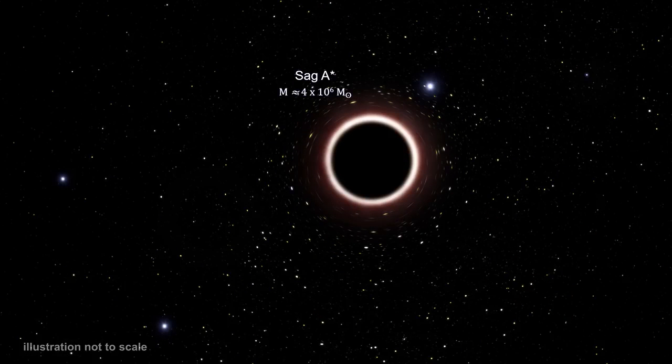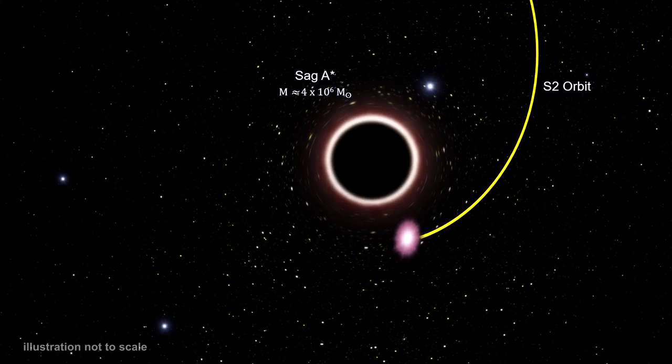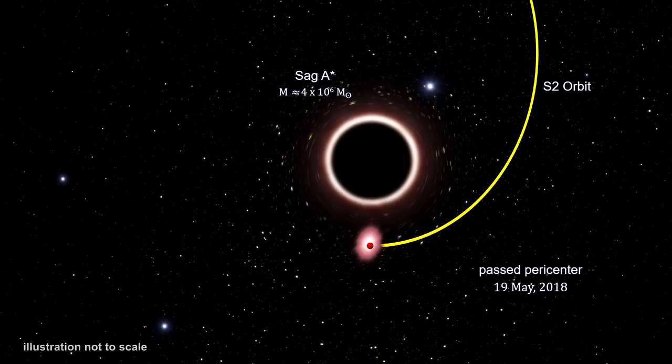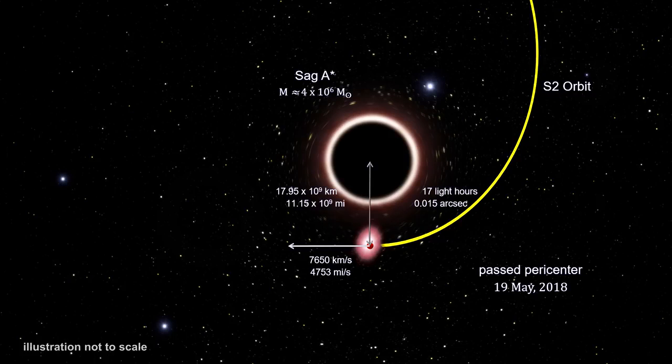These new instruments followed S2 very closely. At the start of 2018, it was accelerating towards SAG-A-star, reaching relativistic speeds. On May 19th, it reached the closest approach, pericenter. At that point, it was traveling at 7,650 kilometers per second or 4,753 miles per second. That's almost three percent of the speed of light. Its distance from the black hole was just 18 billion kilometers, or 11 billion miles. That's only 120 times our distance from the Sun. The separation on the sky between the two points was just 15 milli-arc seconds.